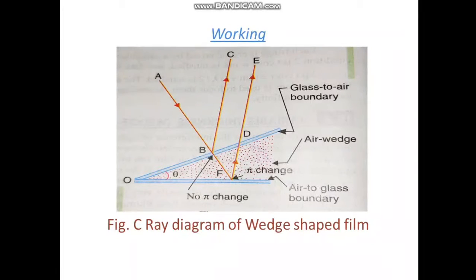In figure C, when the light is incident on the wedge from above, it gets partly reflected. In this figure, we can see that AB is an incident beam.